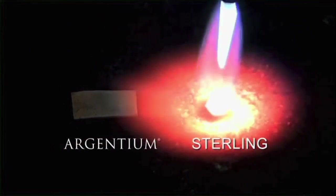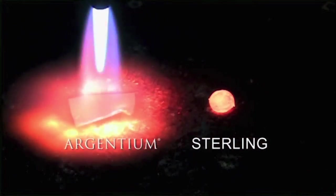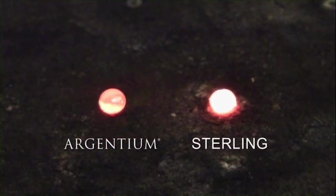You can see the Sterling has a hard time forming into a sphere. The fire scale that forms leaves the surface rough.